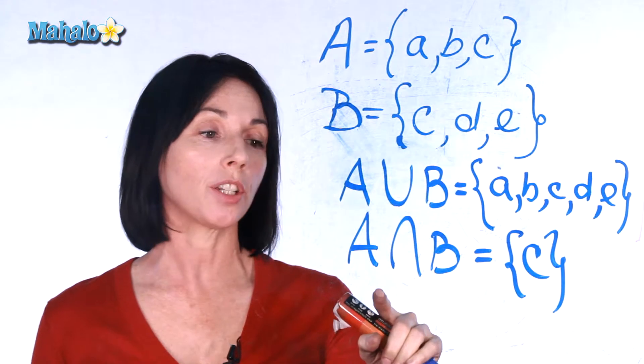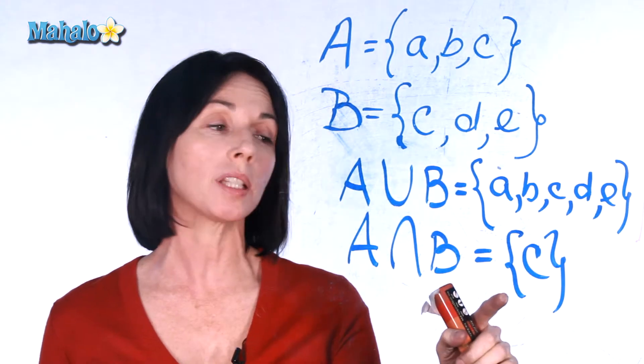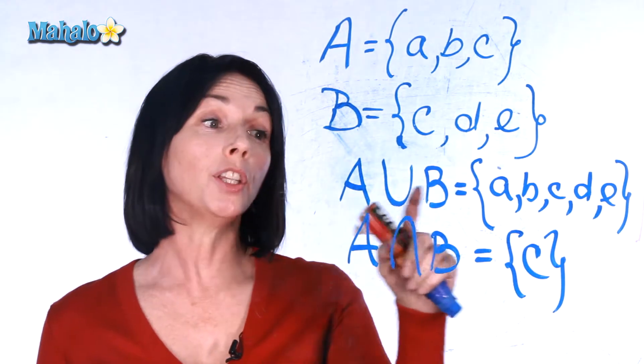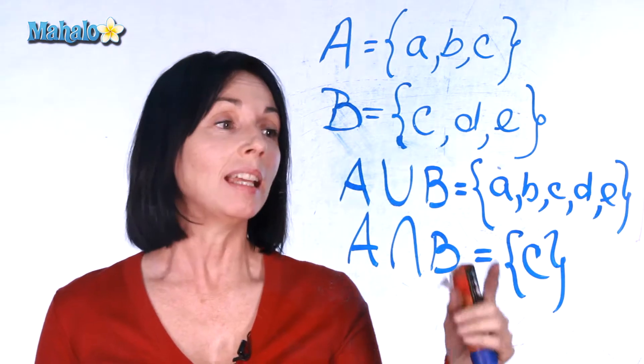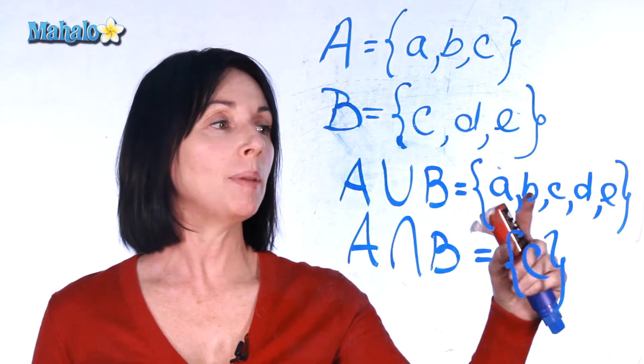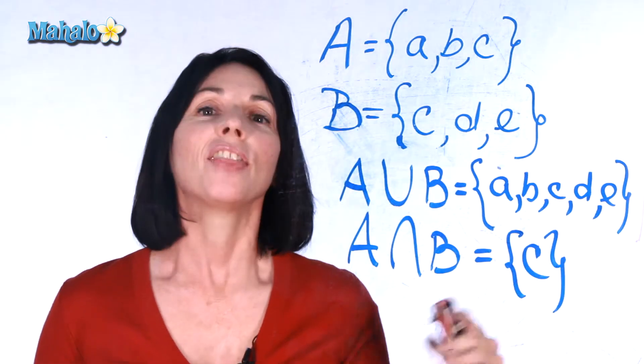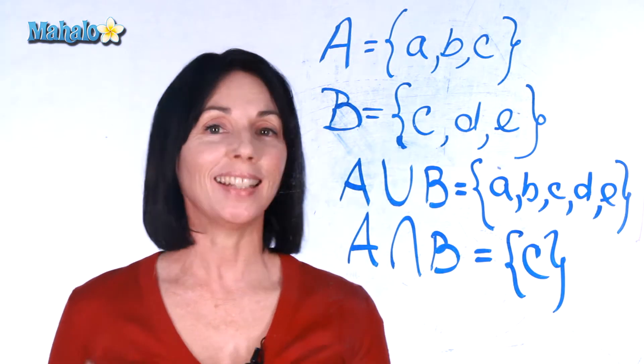So the intersection of sets A and B is a new set, the set {c}. And the union of sets A and B is a new set, the set {a, b, c, d, e}. That's an example of unions and intersections.